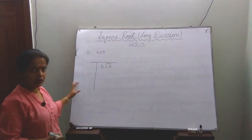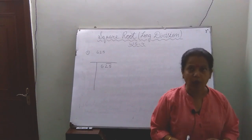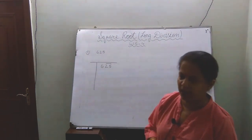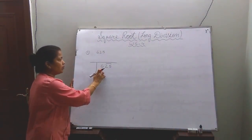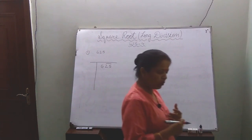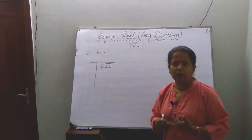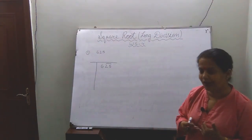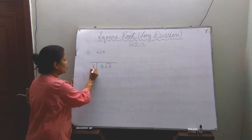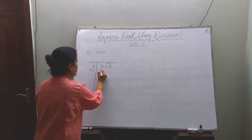Now after this you will take the first number. You have to multiply one number with itself so that the result is either equal to 6 or less than 6. If we multiply 1×1 we get 1. Two times two gives four. Three times three gives nine, and nine is more than six. So we take 2×2, which gives 4.